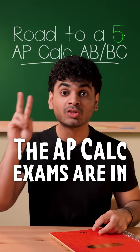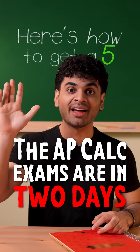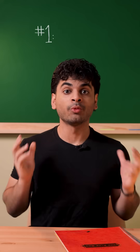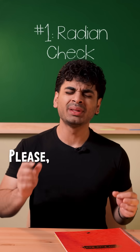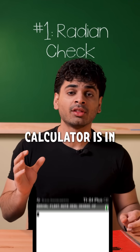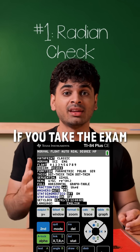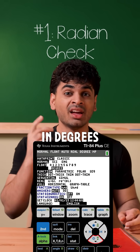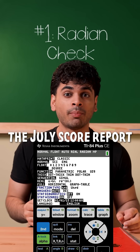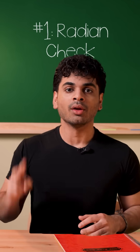The AP Calc Exams are in two days. Here's how to get a five. Number one, radian check. Please make sure your calculator is in radian mode. If you take the exam in degrees, the July score report will not be your friend.